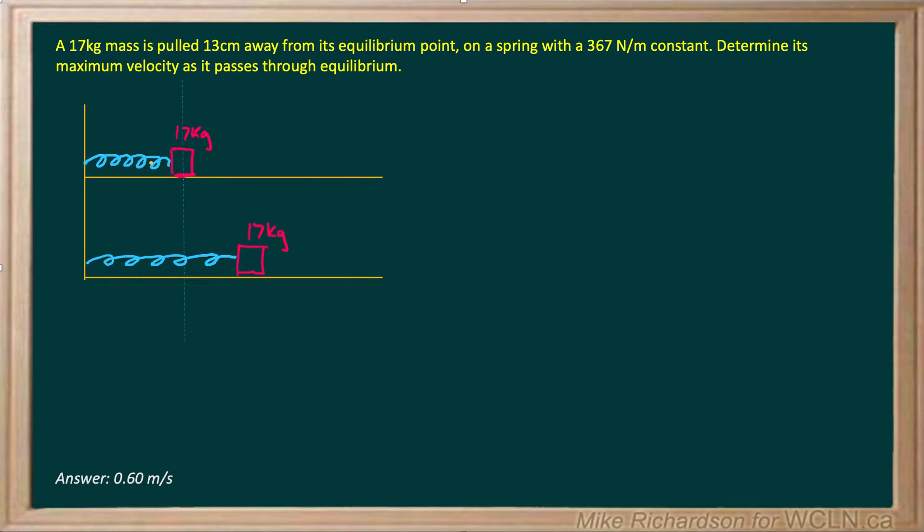Imagine a mass attached to a spring positioned horizontally. It starts in its equilibrium position, which we'll call location A. Then I take that 17 kilogram mass and pull on the spring a distance of 13 centimeters.